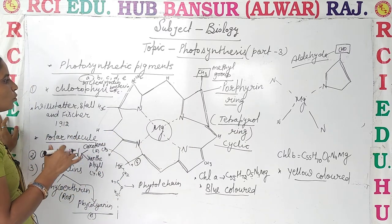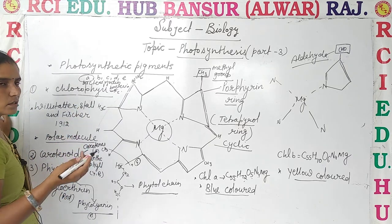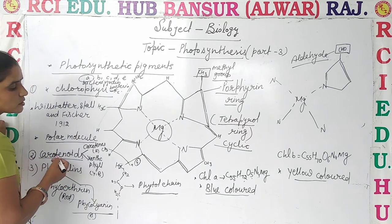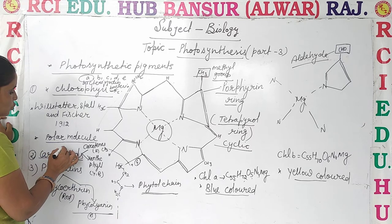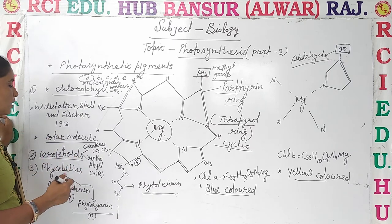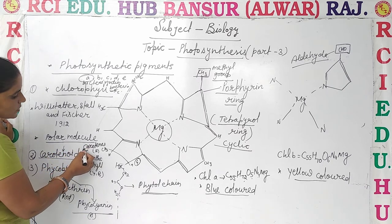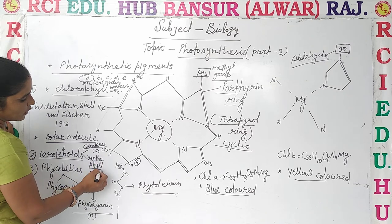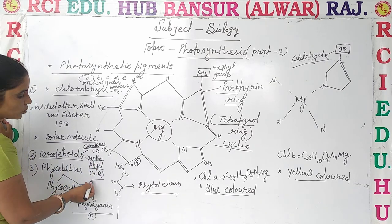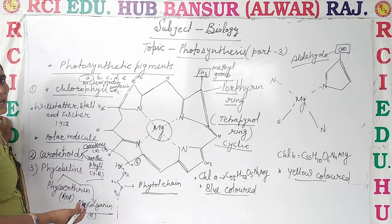Now let's discuss the other pigments that participate in photosynthesis. We have already discussed chlorophyll. The second pigment is carotenoids. Carotenoids are of two types: the light or radiation that chlorophyll cannot absorb is absorbed by carotenoids. These two types are carotins and xanthophyll. Carotins are red in color — for example, lycopene is a carotin.